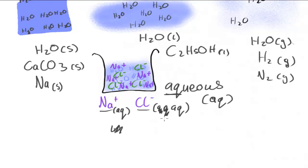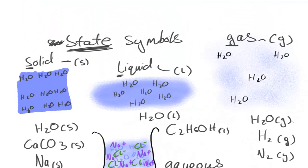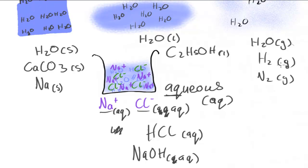We can use this to represent things like acids that are dissolved in water at a particular concentration, so maybe HCl we'd represent with aqueous, maybe sodium hydroxide NaOH which is an alkaline substance we represent with aqueous. So those are the four state symbols which are most commonly used in chemistry: solid, liquid, gas, and aqueous.